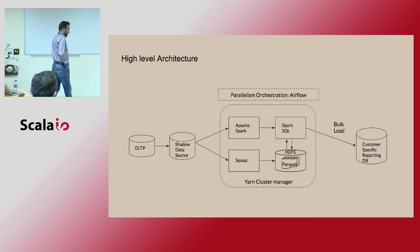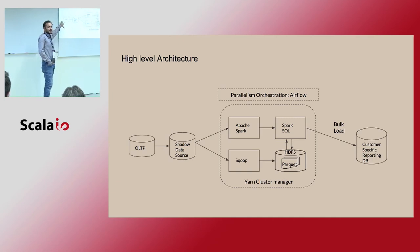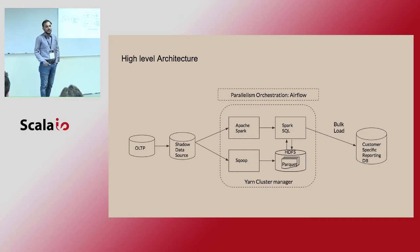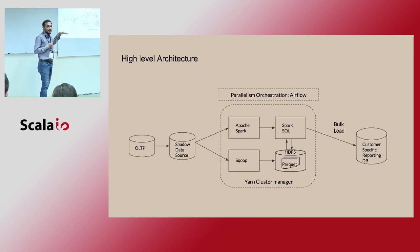This was an enterprise customer where data comes in through an online transaction processing system. You can't connect directly to it — doing so would bring the product down. A log shipping process pulls all data into a data source replica. From there, we read with Spark and Sqoop, and stored commonly used tables in Parquet on HDFS, because queries were touching the same tables again and again — some master tables were being called 25 to 52 times. We crunched those common tables into Parquet and ran all business transformations on top of that.